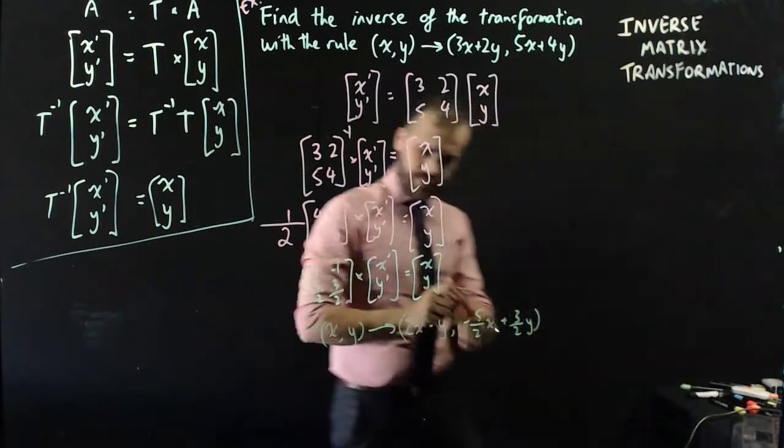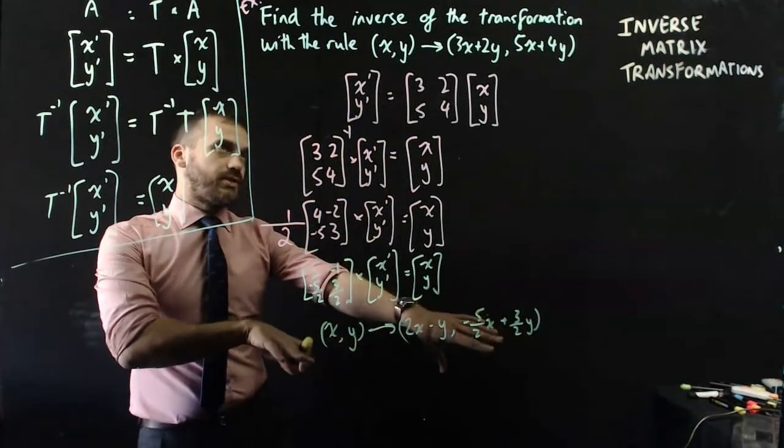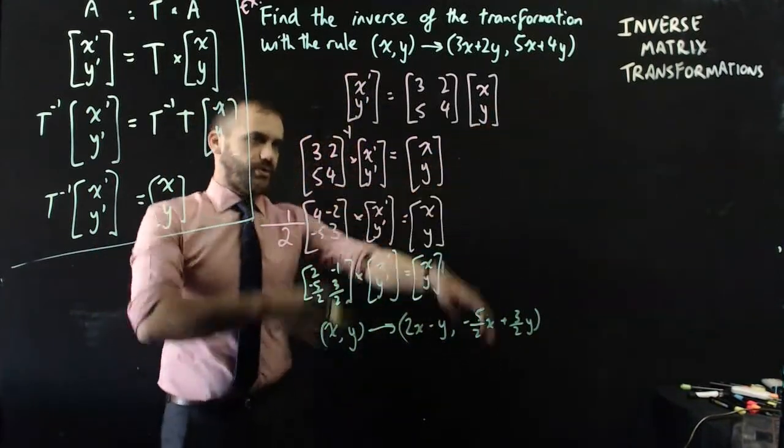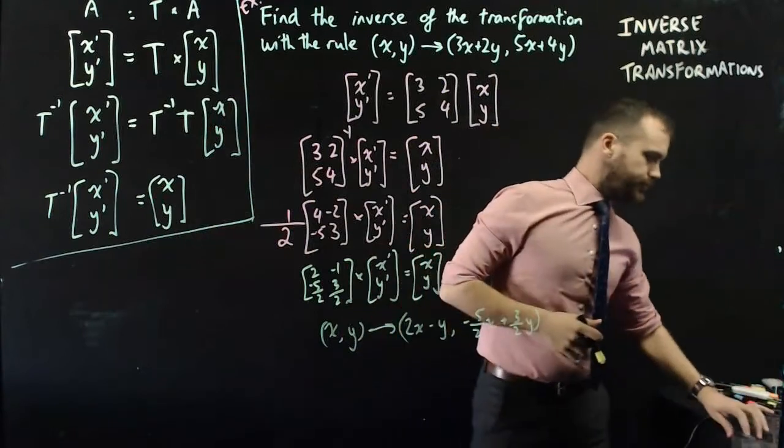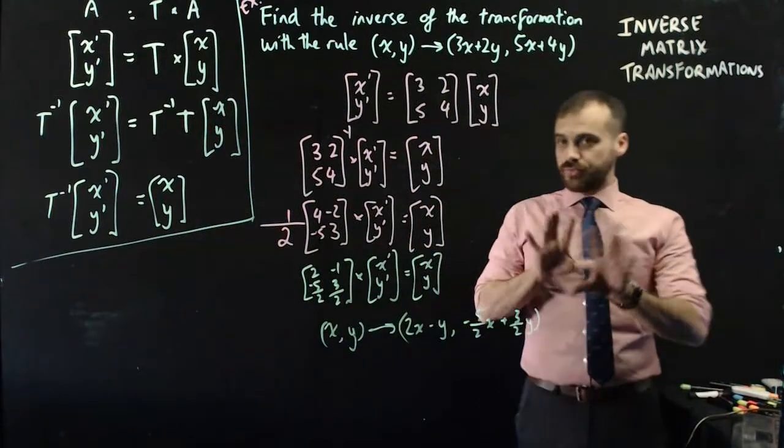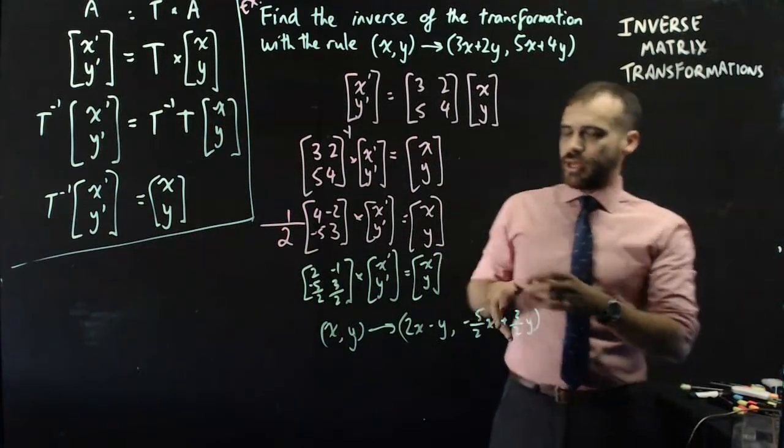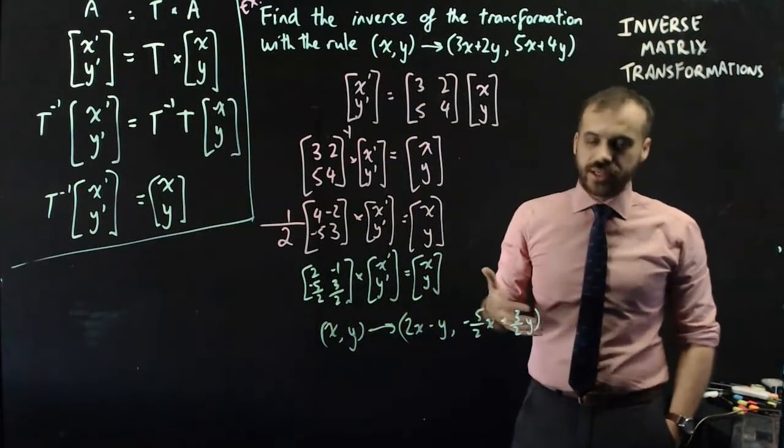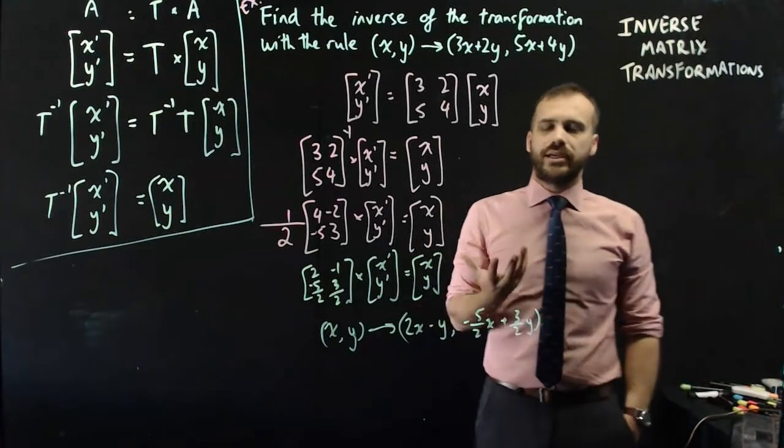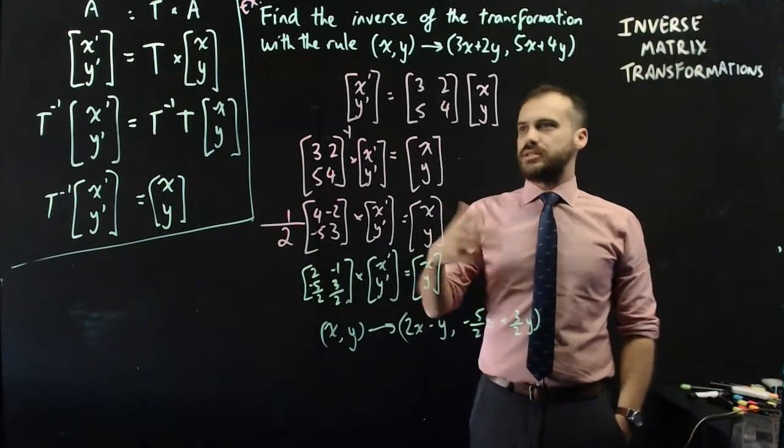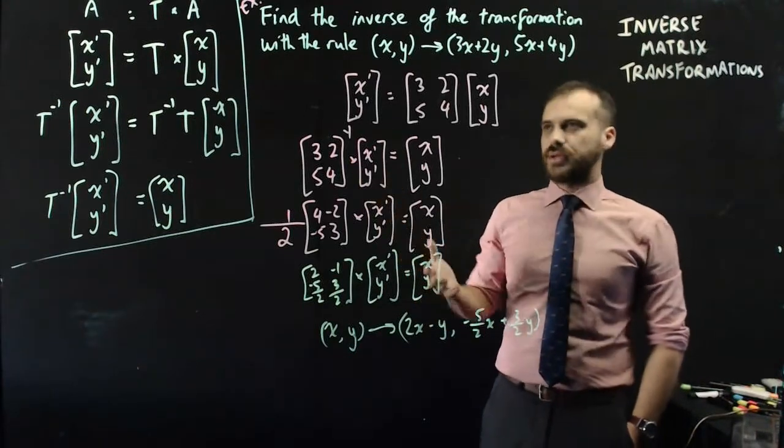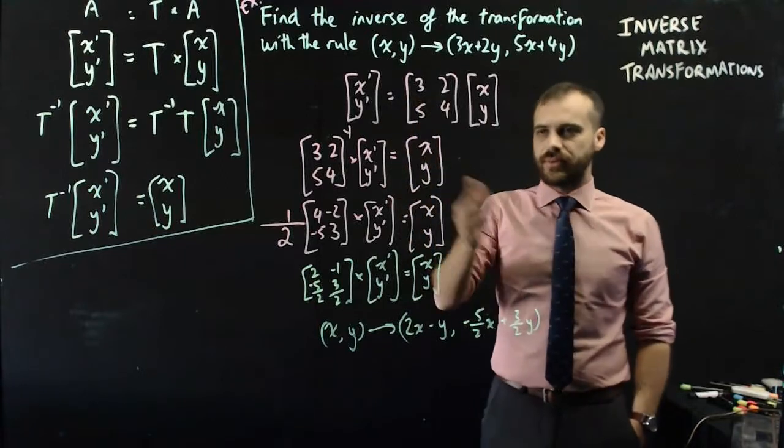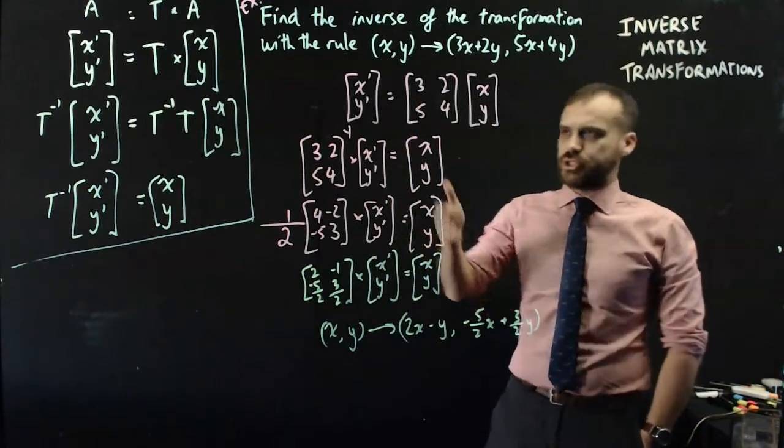Okay, that is the inverse transformation of that. Now, of course, this question could have been asked differently. It might not have asked you for just the inverse transformation like this question has, but it might say something like the image of an object is 5.2 and the transformation was that. In that case, it's actually an easier question, I think.